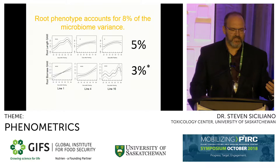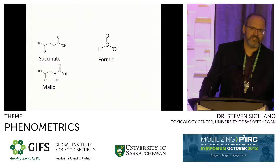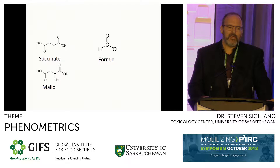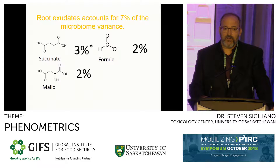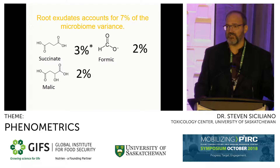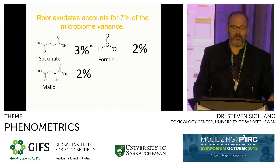Then we looked at root exudates. Three of the big actors you'll always find are formic, succinate, and malic acid. These three combined account for 7% of the microbiome variance, with succinate explaining about 3%. Succinate is a well-known microbiome interaction—it's well-known that plants regulate it, and there are great papers on mutants showing what knocking it out does to the microbiome.